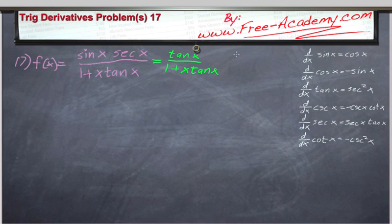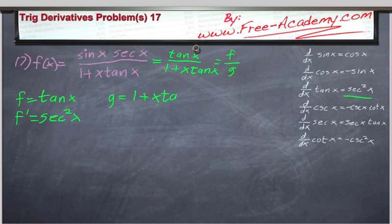This problem is going to beg for us to do the quotient rule. So that's when we have f divided by g. So f is equal to the tangent of x. The derivative of f, f prime, is equal to secant squared of x.